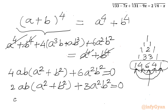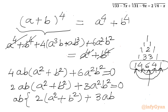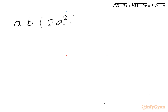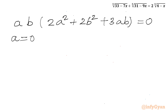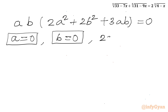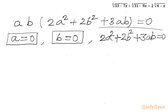Taking ab as a common factor: ab times (2a² plus 2b² plus 3ab) equals 0. This product equals zero, so we get three cases: either a equals 0, or b equals 0, or 2a² plus 2b² plus 3ab equals 0. We will solve these one by one.